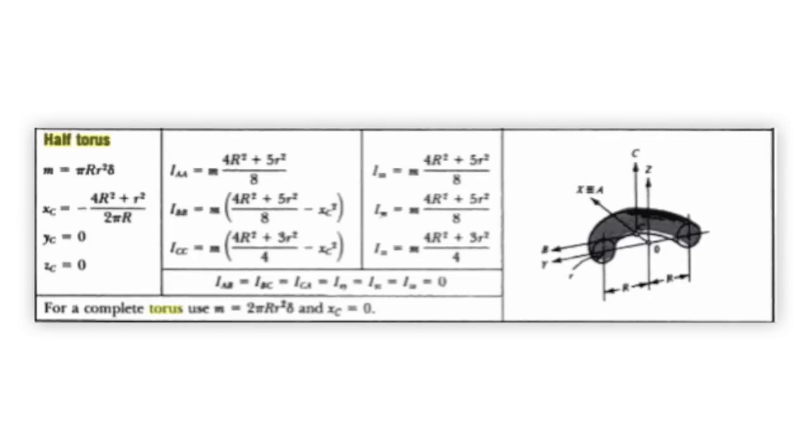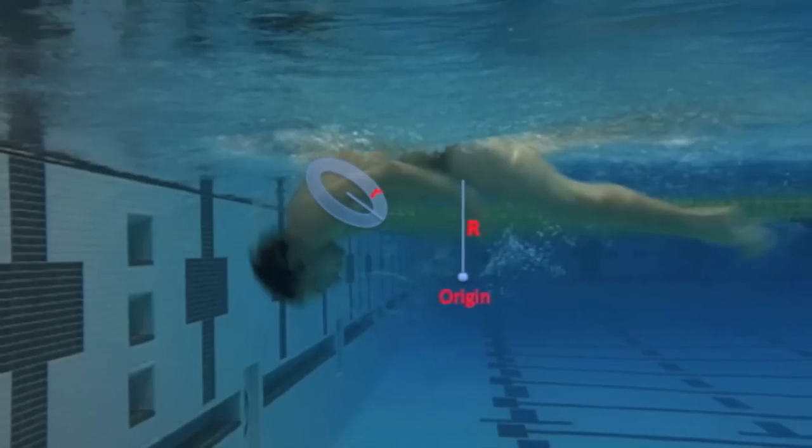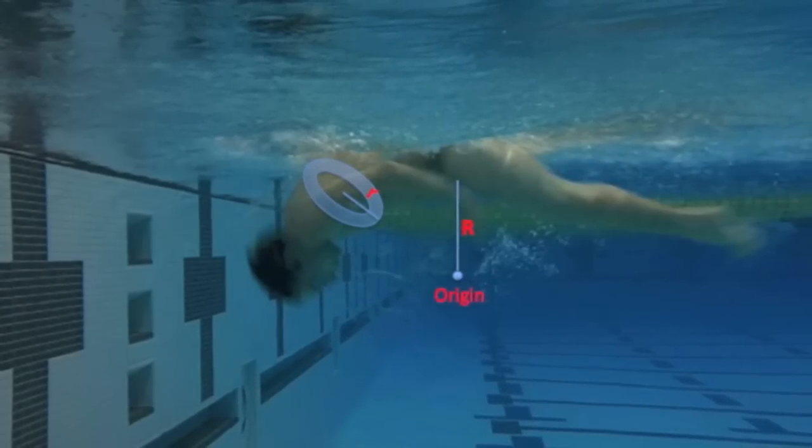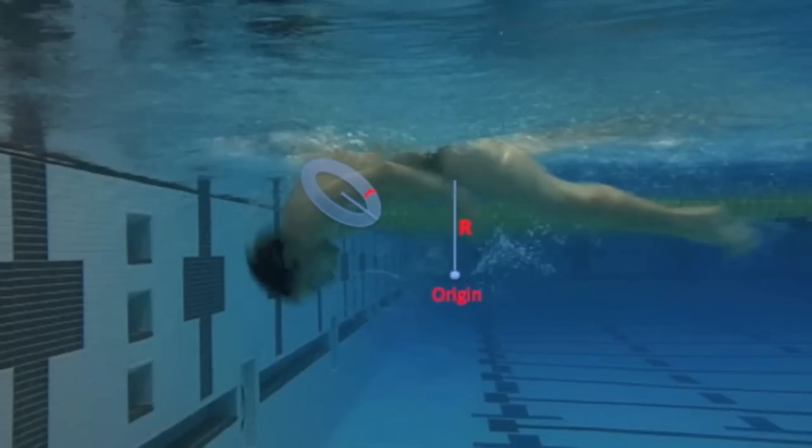For a half-torus rotating about the z-axis, its moment of inertia is m, the mass, times 4 big R squared, the radius of the rotation, plus 3 little r squared, that is the radius of the actual torus itself, all over 4. Going back to the swimmer, I've marked little r and big R, where big R is the radius of the rotation and little r is the radius of the swimmer's torso.